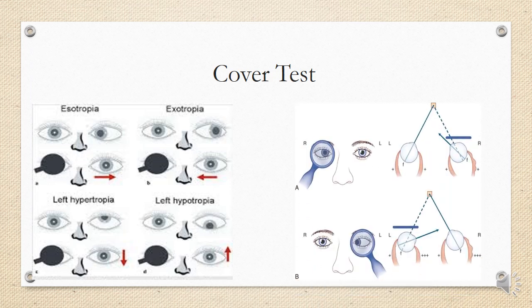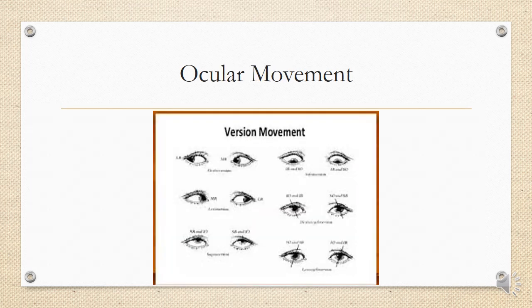When the primary deviation is measured by covering the affected eye, because of Hering's law, the deviation is less. But when you cover the affected eye, the other eye needs more innervation to move toward the affected side, leading to an increased secondary deviation.